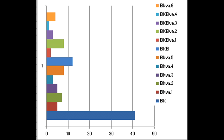Each beat had a few variations. BK had up to six variations and BKB had four. Now I'm going to play the different variations — first BK, ranging from one to six, and you're going to hear them in order.